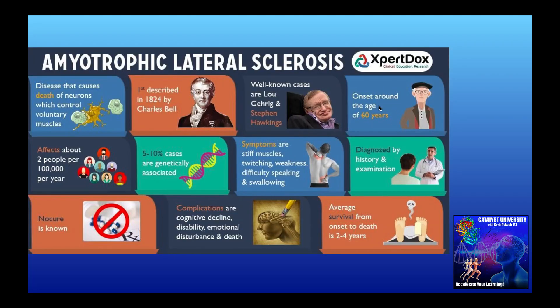For ALS, the average age of onset is about 60 years. It affects about two people per 100,000 per year. Interestingly, only about 5 to 10% of cases are genetically associated — meaning passed on from parent to child. The other 90% of cases are thought to have some environmental component that triggers onset, though the exact environmental factor and how it plays into genetics is unknown. There is no cure for ALS, and the research is relatively underfunded compared to some other horrible diseases. The average survival from onset to death is about two to four years.